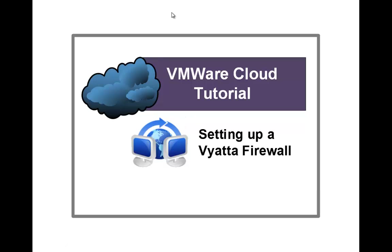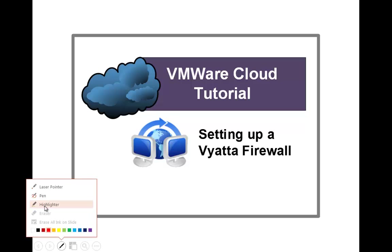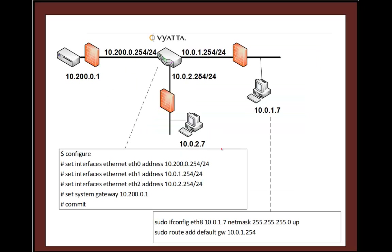In this demonstration we're going to set up a VIATA firewall inside the vSphere infrastructure. We're going to set up a VIATA firewall with three interfaces: one is outside or public, one is inside, and the other one is a DMZ.